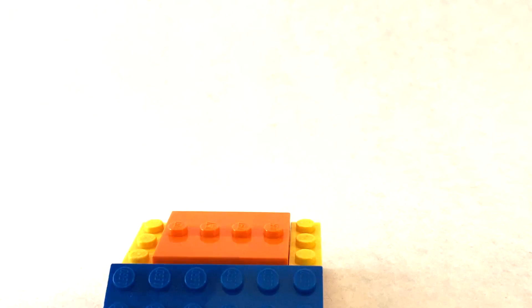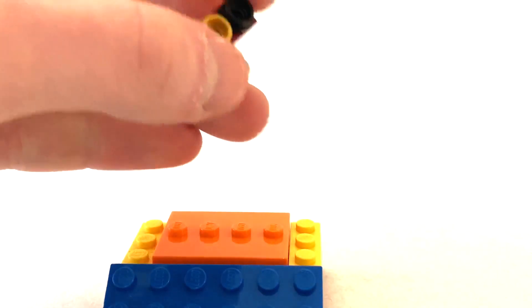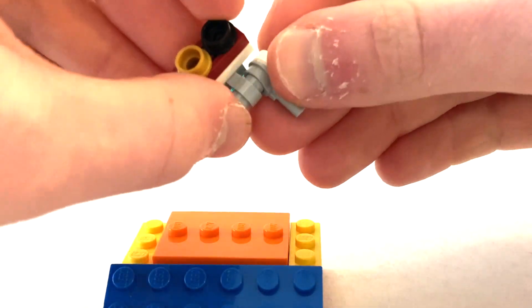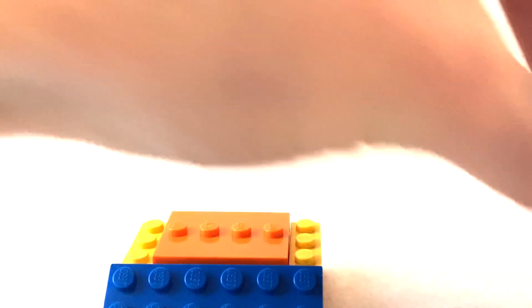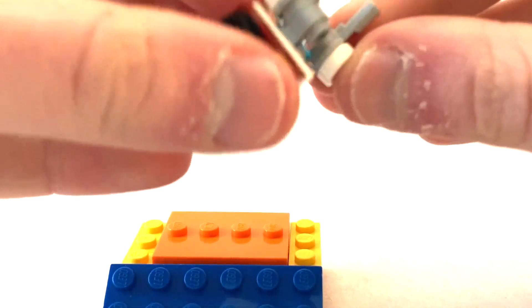And then you take the rest of the body of the BD-1, you place one on this side, and one on the other side, like so.